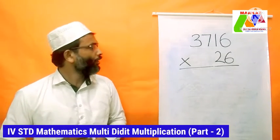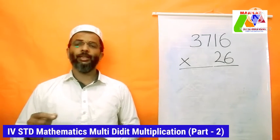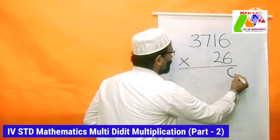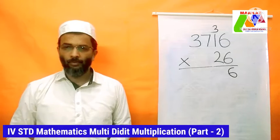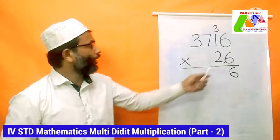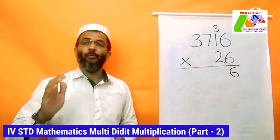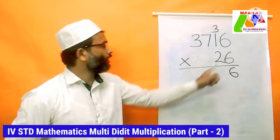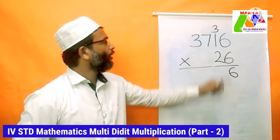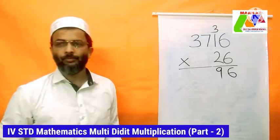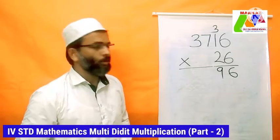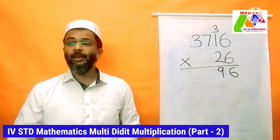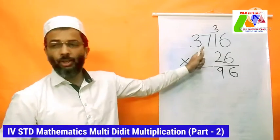Our first step: 6 × 6 = 36. That is a two-digit answer, so we leave the 6 in our answer line and carry 3 above the next digit. Next step: 6 × 1 = 6. We have a one-digit answer, so add the carried 3: 6 + 3 = 9. Next: 6 × 7 = 42 — a two-digit answer; write 2 in the answer line and carry 4 above the next digit.